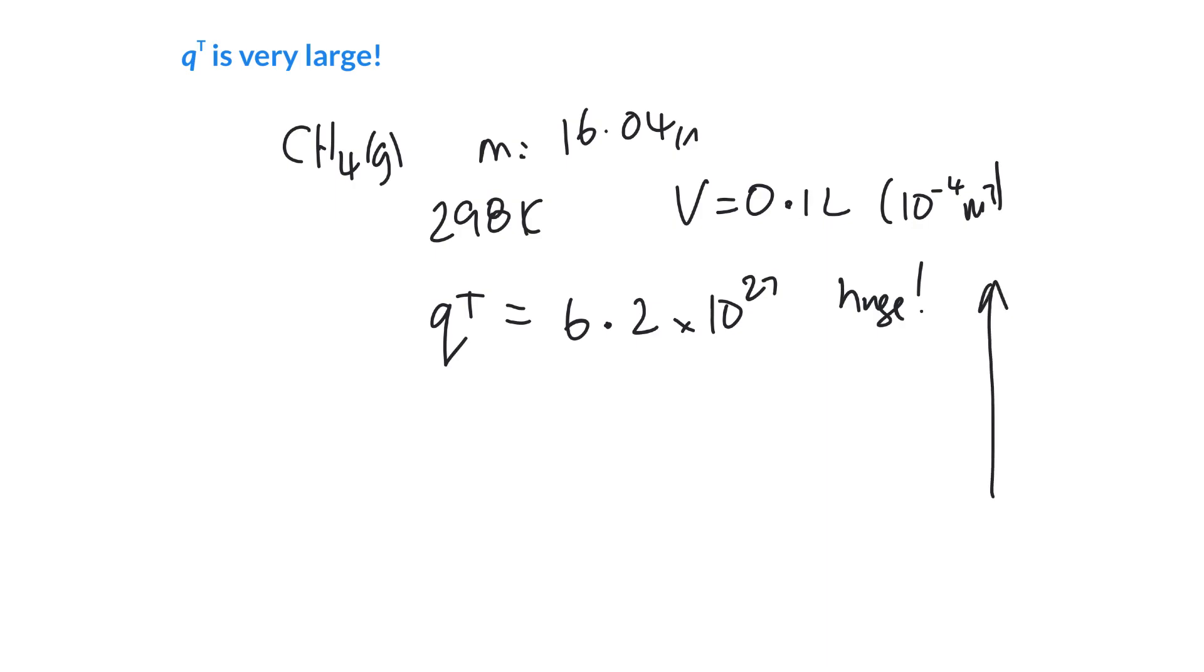And those translational energy levels are so close together that at room temperature methane can access 10 to the 27 of these. So they're not technically a continuum, because there is an energy gap between them. But you're looking at so many of them, so packed so closely together, that really this methane can really pick anyone it likes.